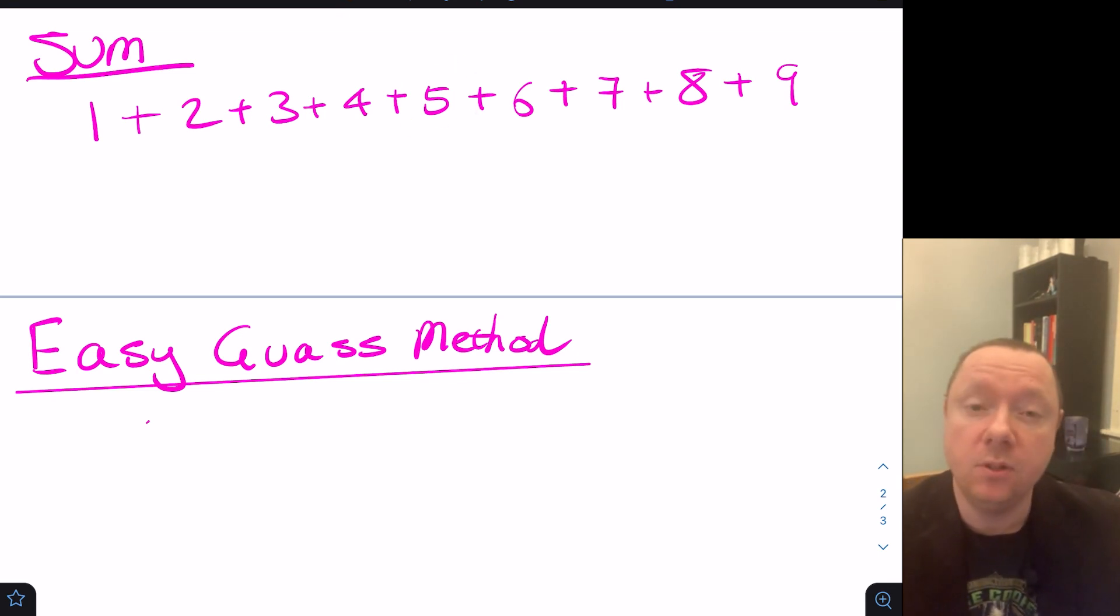Now you can formalize that to do any string of numbers from 1 to 100 or 200. All you have to do is take the last number, multiply it by what the next number would be (which is 10), and then divide your answer by 2.